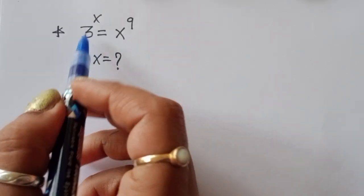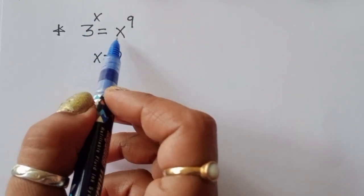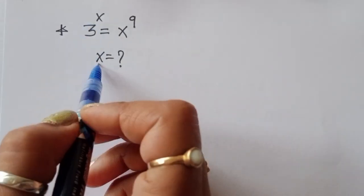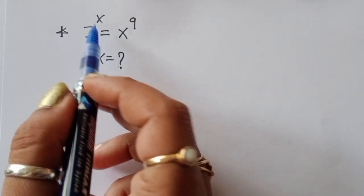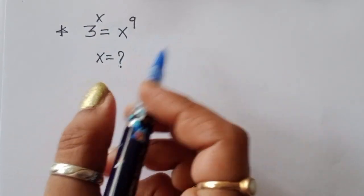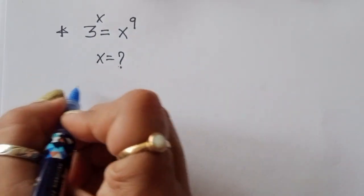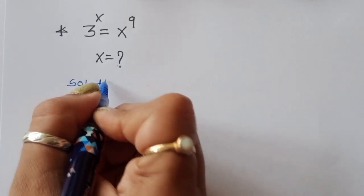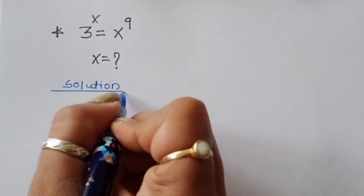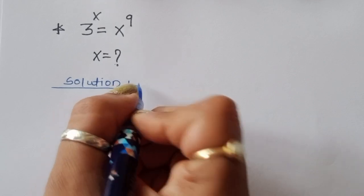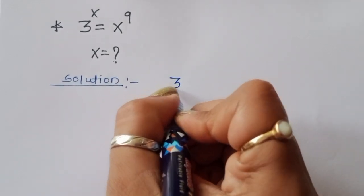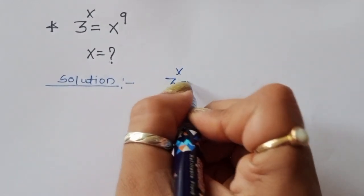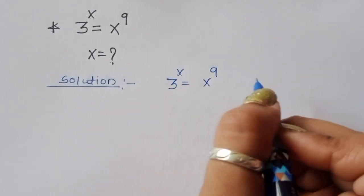The question is: given 3 power x is equal to x power 9, we have to find out the value of x. Let's see the solution. 3 power x is equal to x power 9.